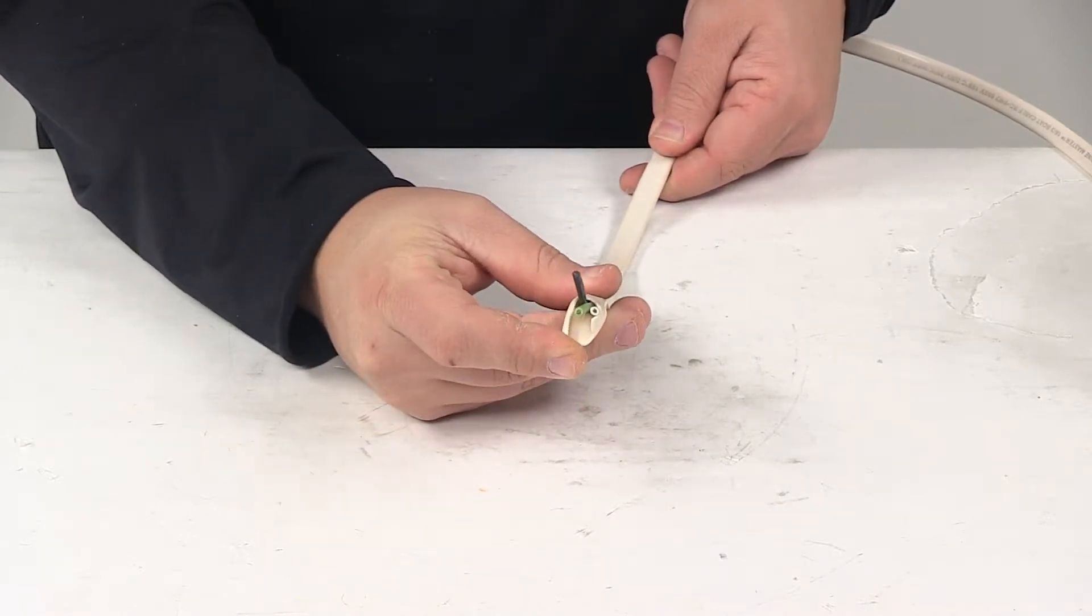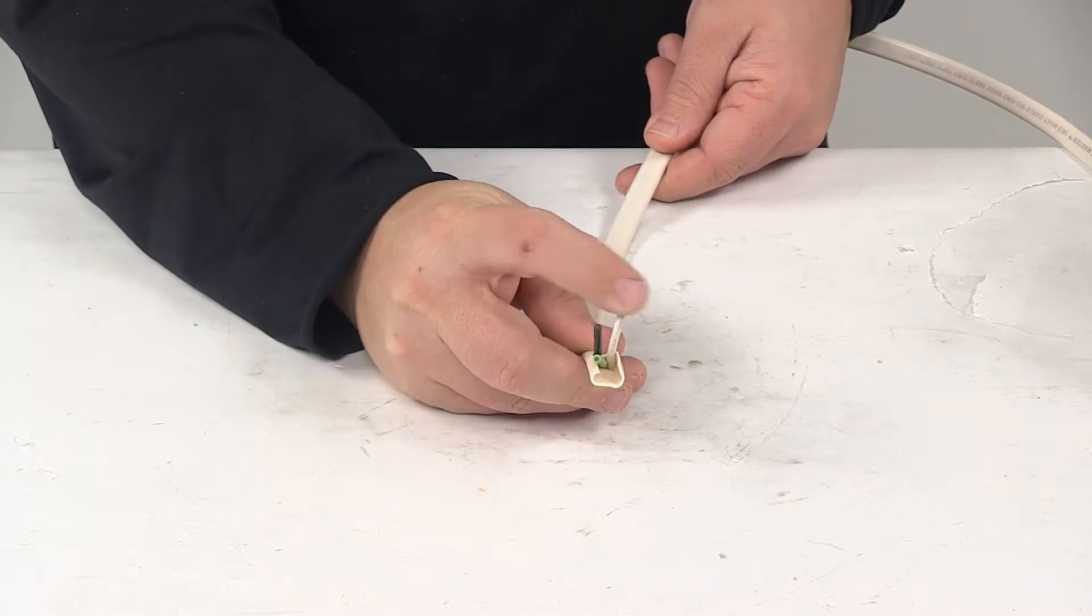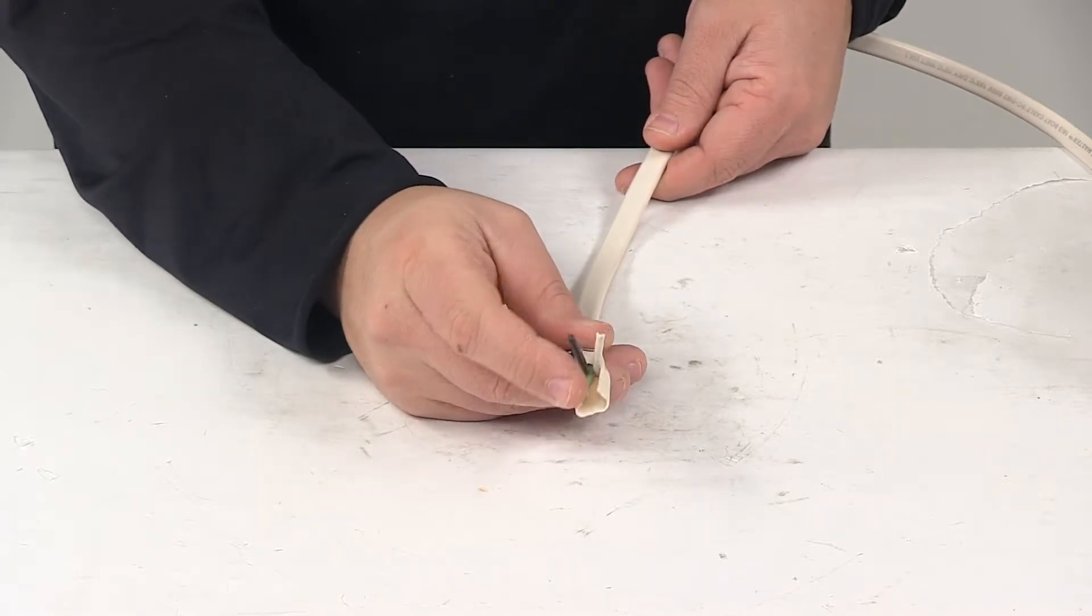I did strip back the wiring or the jacket a little bit so you can see internally. You can see that we have three wires in there. We have a white wire, black, and green.